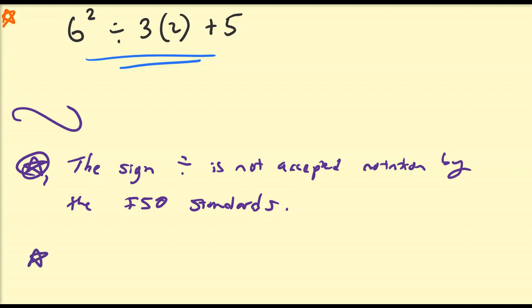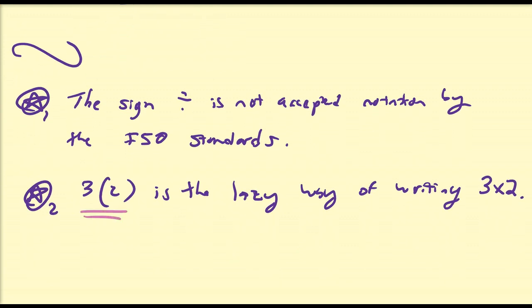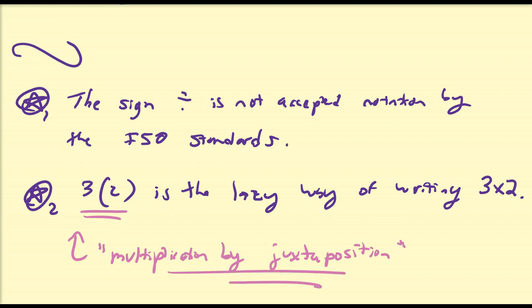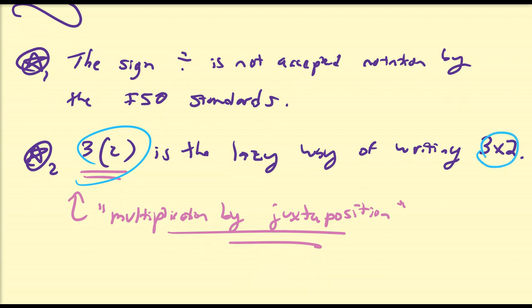The second point I want to note is that three parenthesis two is the lazy way of writing three multiplied by two. And this is also not so important by itself, but in regards to this problem, it definitely does contribute a lot. Some people will refer to this type of expression as multiplication by juxtaposition. Some people will treat this type of operation as a different priority than just three times two. It really depends on who you talk to, who your teacher is, and their experience.